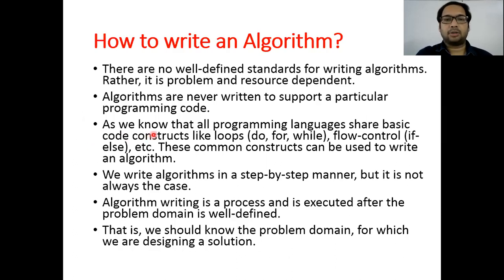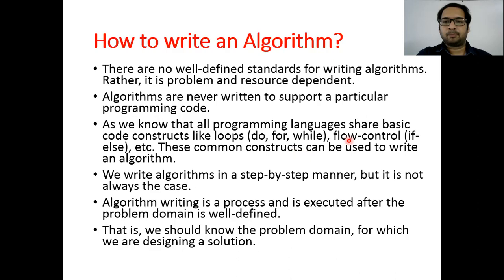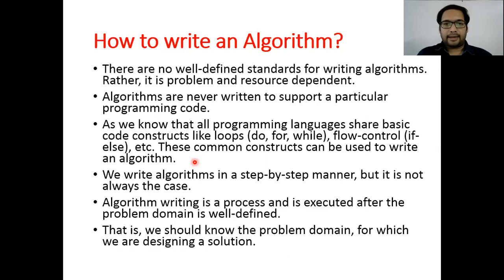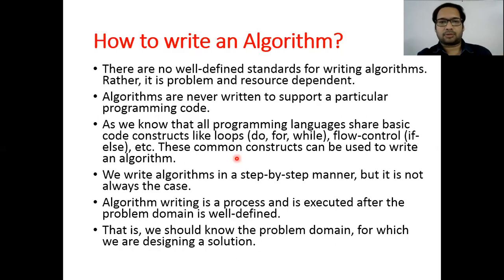The third point is that all programming languages share basic code structures like loops. In most programming languages we have do, for, and while loops, and flow controls like if/else. These features are available in almost all programming languages, so these common constructs can be used to write an algorithm. There can be scenarios like yes or no decisions, which can be handled with if/else, and scenarios where we want to repeat steps more than once, which can be implemented with loops. We can also use these constructs in algorithms to reduce the number of steps.